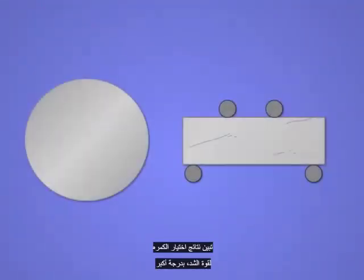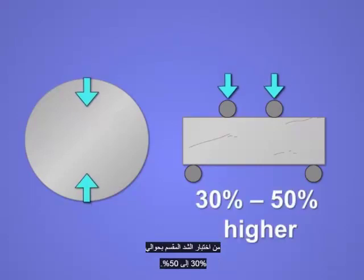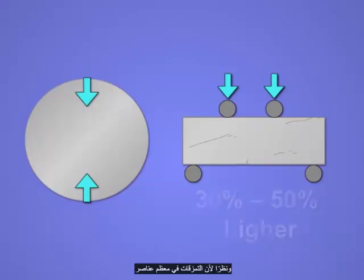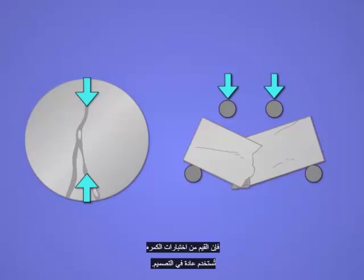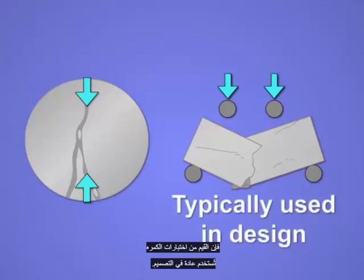The beam test results in predictions of tensile capacity generally 30 to 50% larger than the split tension test. But because cracking in many concrete elements is due to flexure, the values from the beam tests are typically used in design.